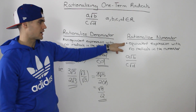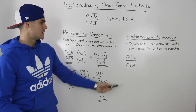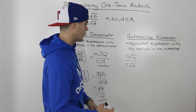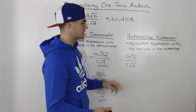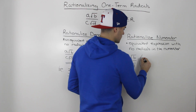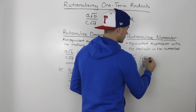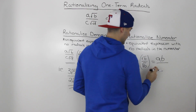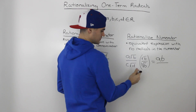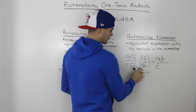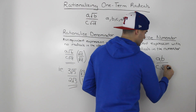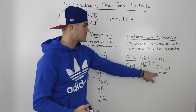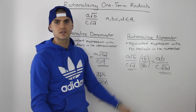Rationalizing the numerator is the same idea — you're just creating an equivalent expression with no radicals in the numerator this time. So if we take our general format, a root b over c root d, and we're asked to rationalize the numerator, we want to get rid of the root b in the numerator. We multiply it by root b over root b. Then a root b times root b gives us a·b, and in the denominator we have c times 1 which is just c, and the radicals multiply: root d times root b gives us root bd. So the two expressions are equivalent, but now there are no radicals in the numerator.